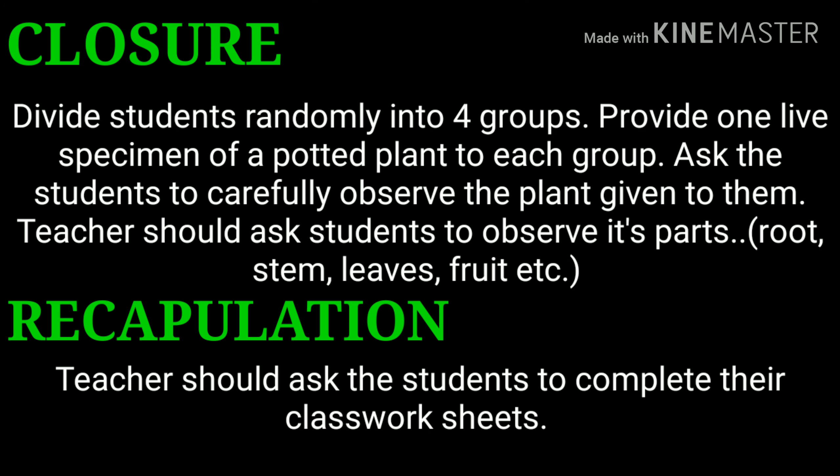Then comes the closure. The teacher should divide students randomly into four groups and provide one live specimen of a plant to each group. Students should carefully observe the plant given to them, noting its parts — root, stem, leaves, fruit, etc. The teacher should provide different plants to the different groups.